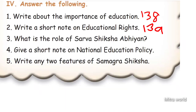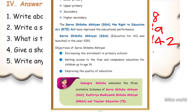Next, what is the role of Sarva Shiksha Abhiyan? Take page number 142. Sarva Shiksha Abhiyan was launched in the year 2001. Its aims include increasing enrollment in primary schools, getting access to free and compulsory education for children up to age 14, and improving the quality of education.